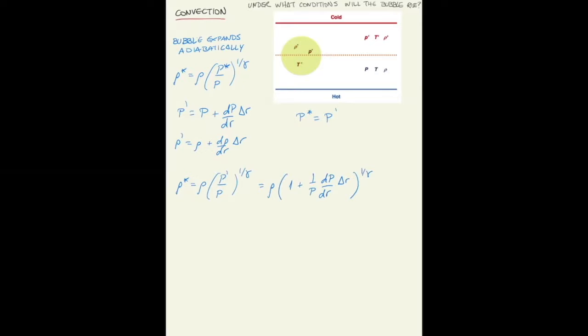Considering that this slab is infinitesimally thin, the second term here is much smaller than one, so you can Taylor expand the exponent. Then the density in the bubble, density star, is equal to rho times (1 plus 1 over gamma times p over dp/dr delta r).